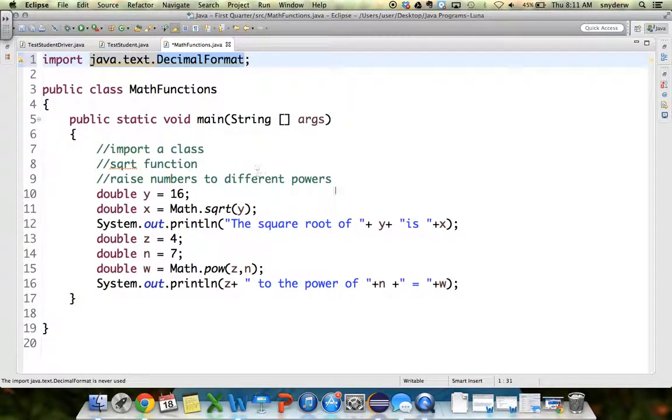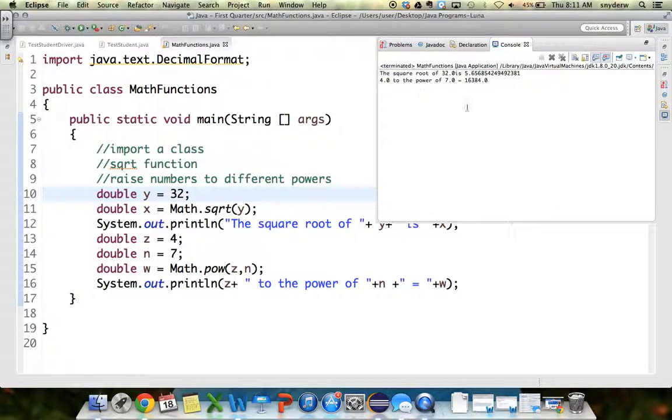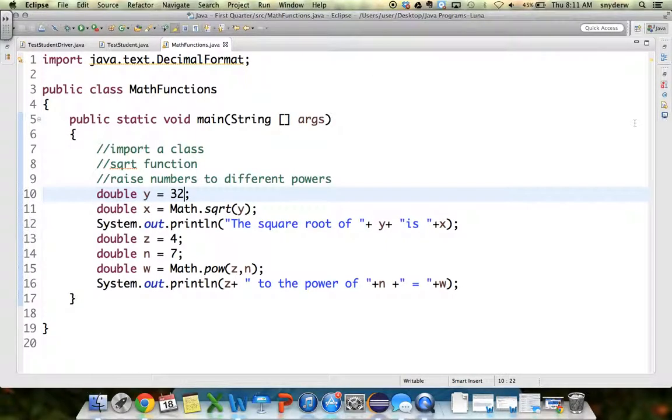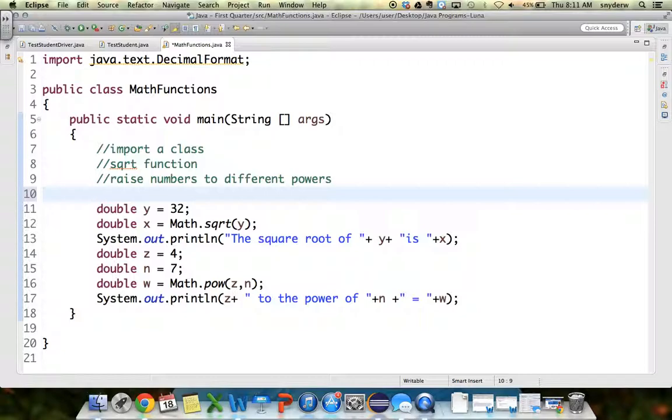So the way this class works is, some of you have seen decimals and you only want to go two decimal places. So if we put, let's switch y here to the number 32 and we say, okay, what's the square root of that? 5 point and the number keeps going. Point 6 5 6 8 5 4. Let's say I only want to know about the first two decimal places. I don't want to see the rest of it. It kind of looks ugly.